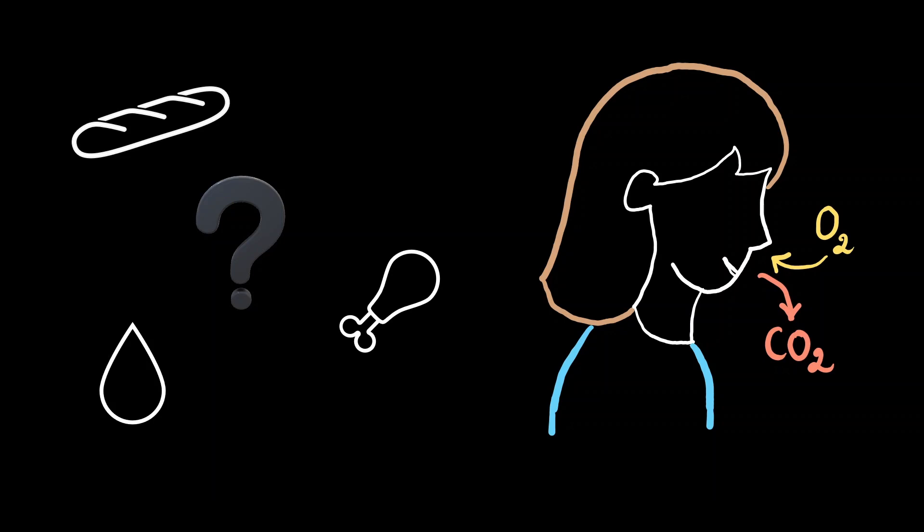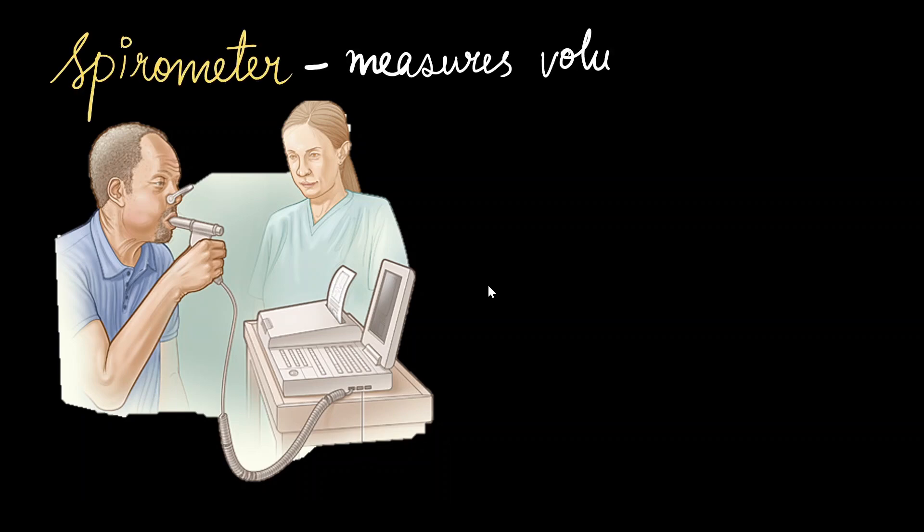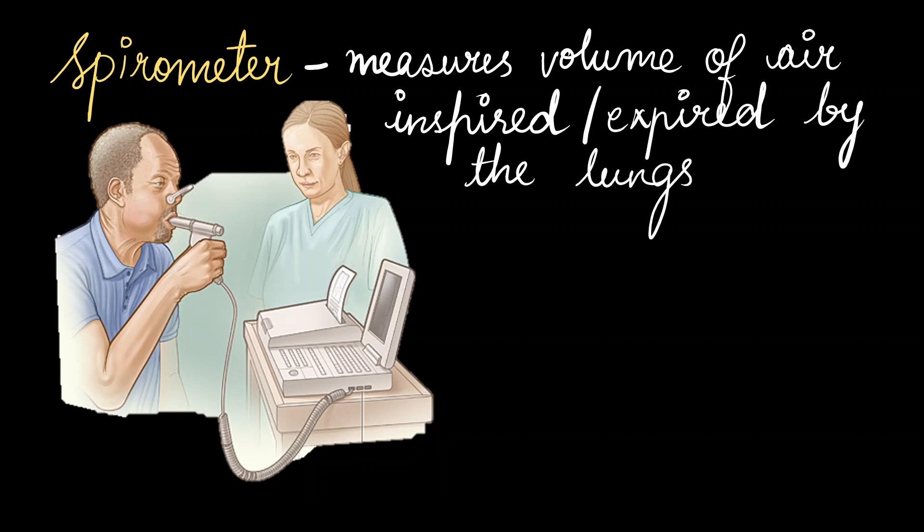So, how do we measure what we are breathing in and out? Is there a way to measure it? As a matter of fact, we do. This instrument is called a spirometer. A spirometer measures the volume of air that is inspired or expired by our lungs. So, basically, it measures ventilation.